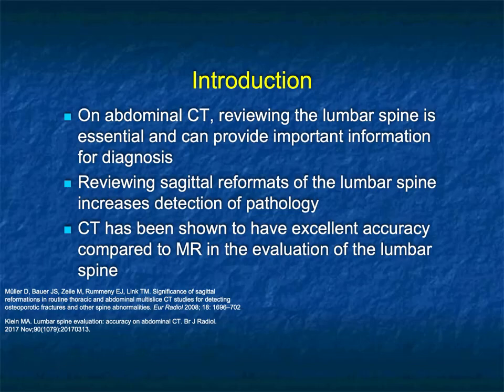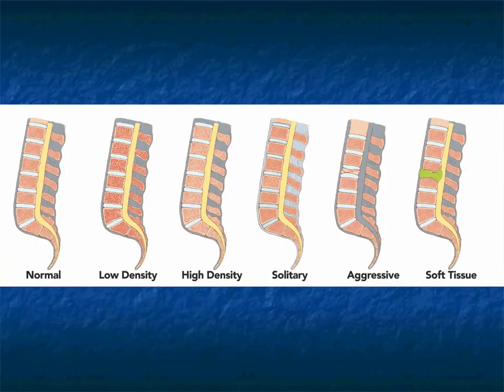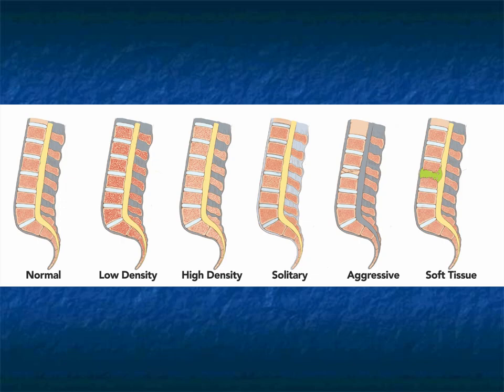Obviously MR has lots of advantages in looking at the spine, but CT is really terrific, and you get those images for free when you're doing a CT scan of the abdomen or pelvis. The way we thought about things was divided into six categories. We talk about the normal, low density like osteoporosis, high density like sclerosis — maybe metastatic prostate or osteopetrosis — solitary lesions in the spine, aggressive lesions which are not a simple collapse due to osteopenia but more likely a tumor, and then lesions with soft tissue such as osteomyelitis or aggressive tumor.